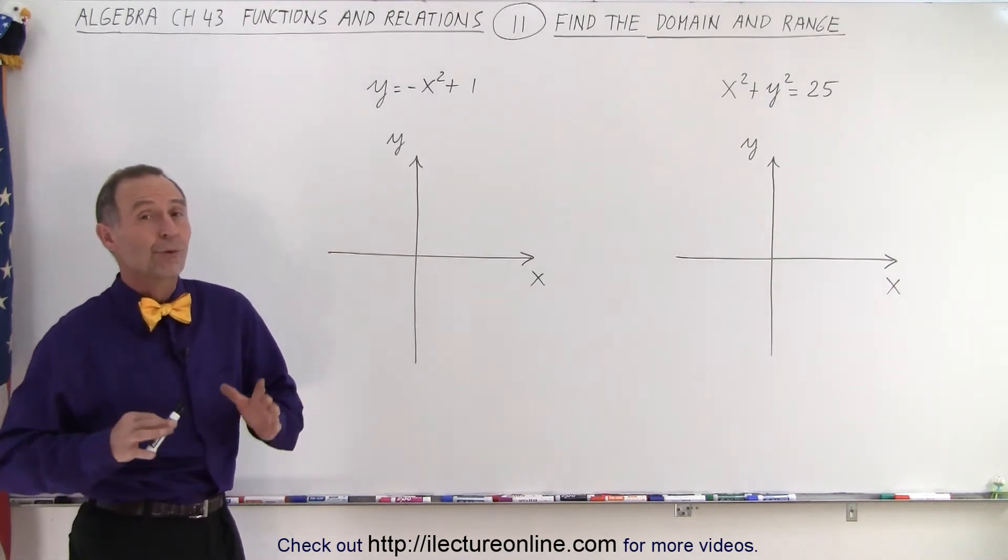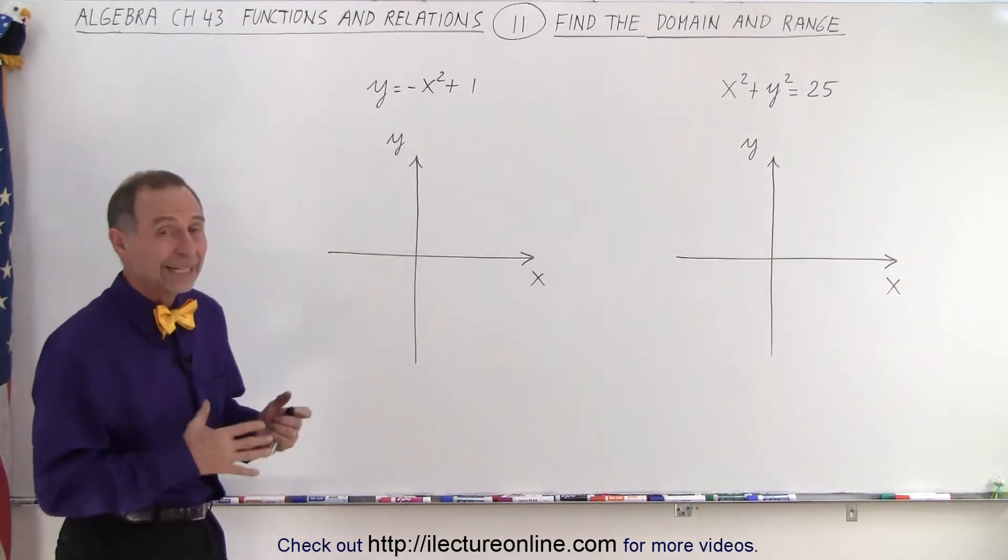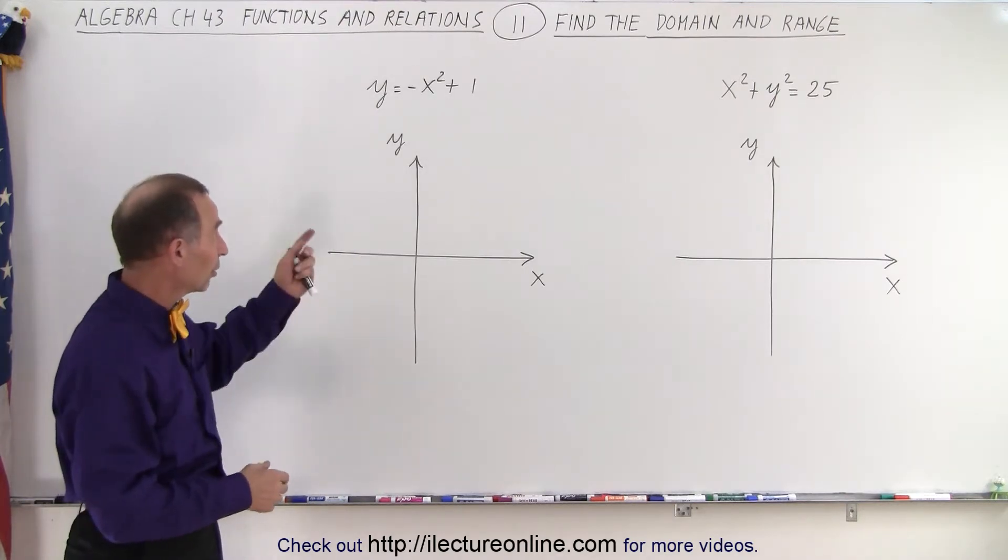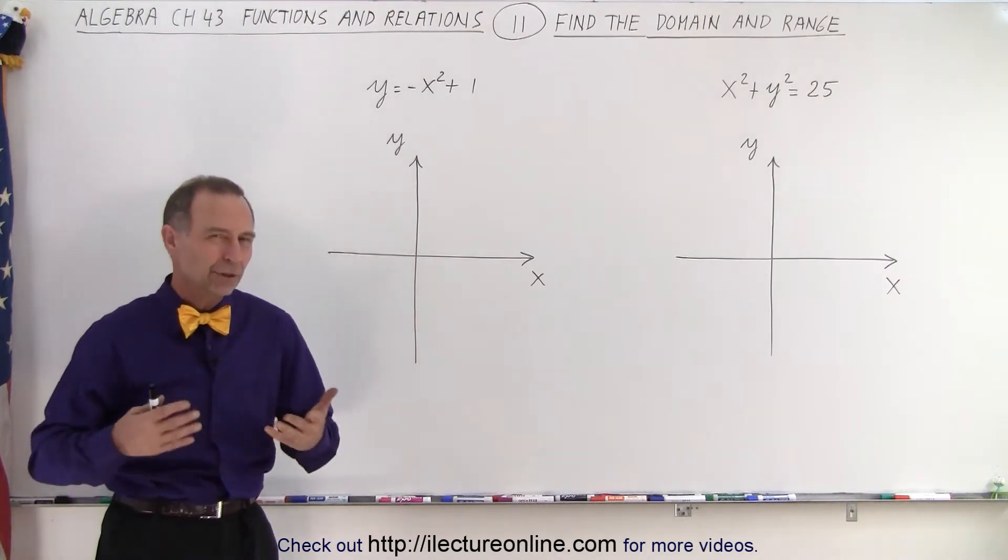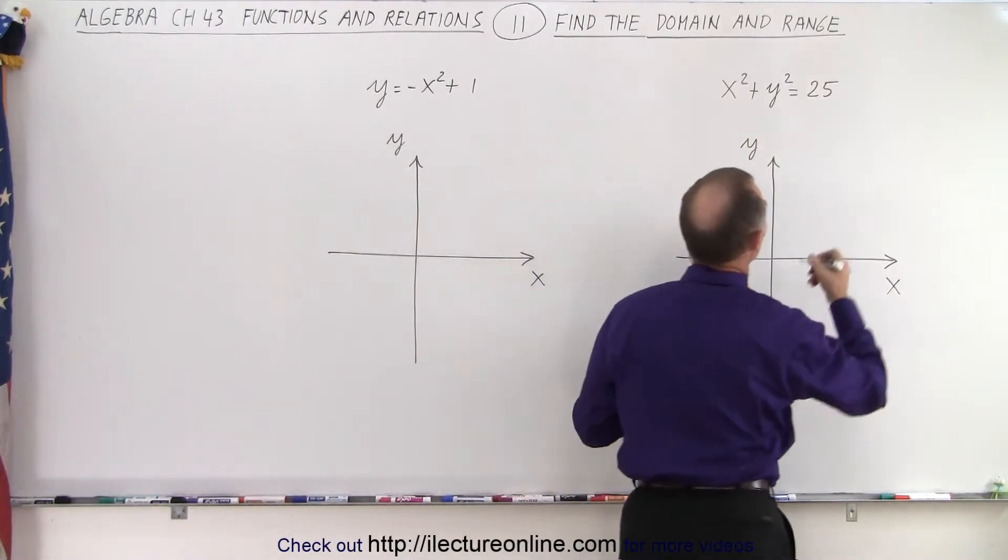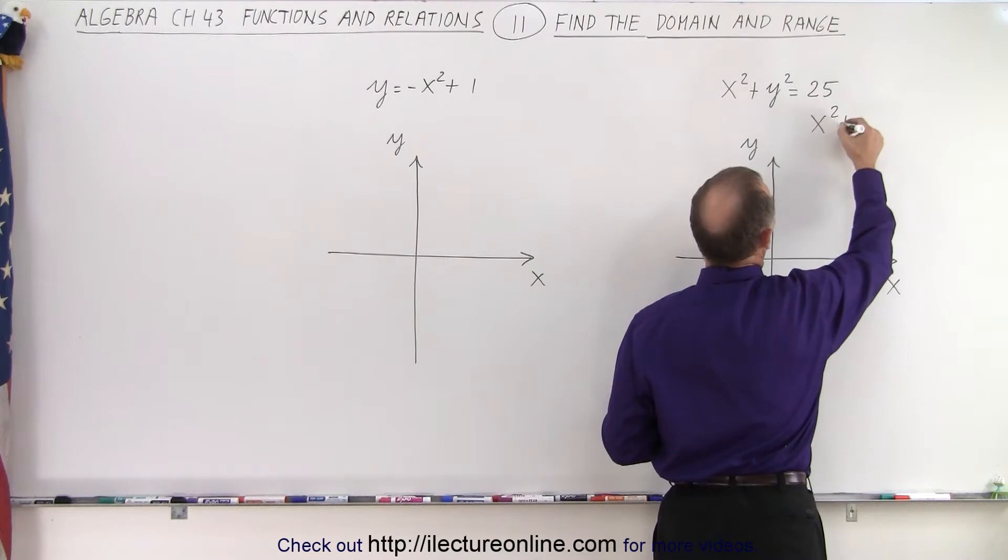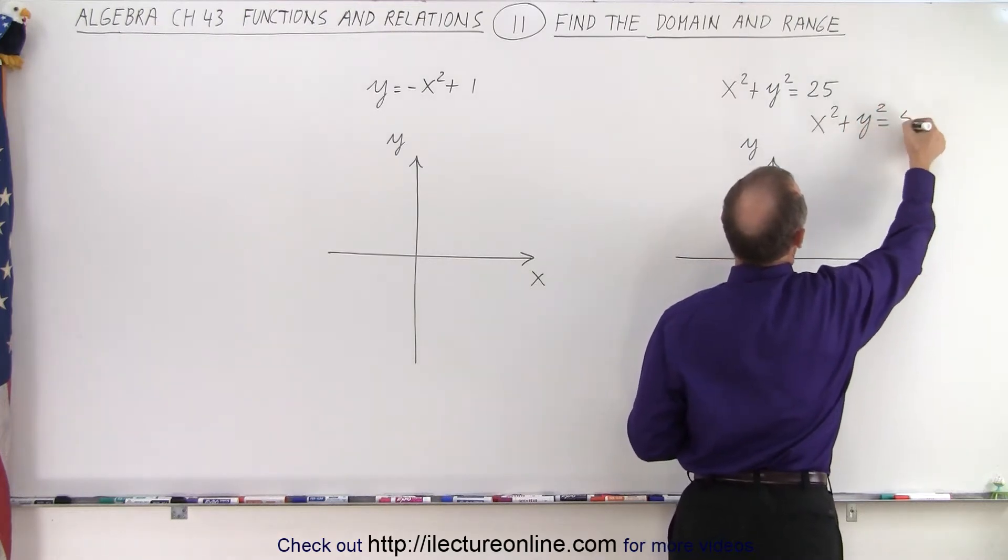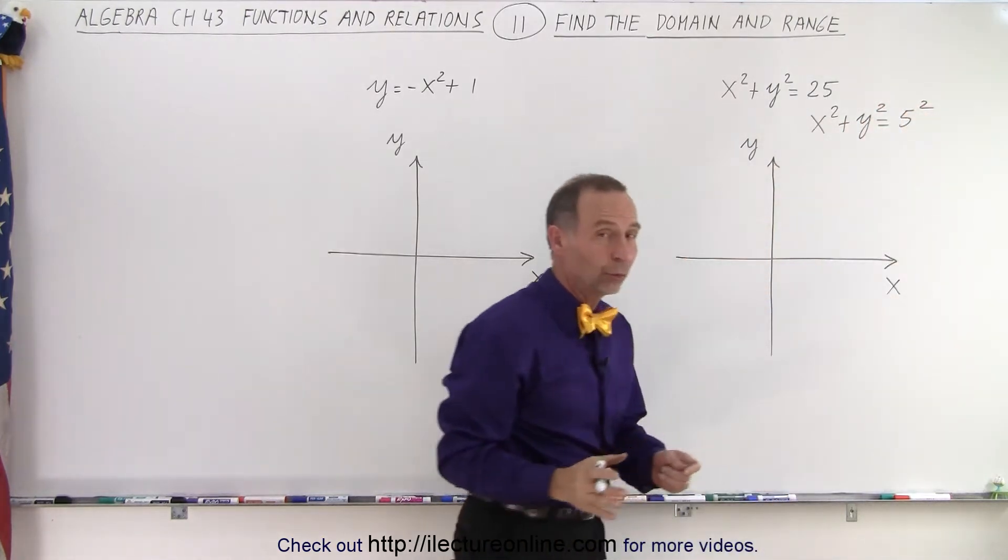Again I recommend that you graph the function or the relation, in this case that's the relation here's a function, so that you can see where the limits are. Here we recognize that this looks like a circle because this can be written as x squared plus y squared equals 5 squared which means it's a circle with radius 5.